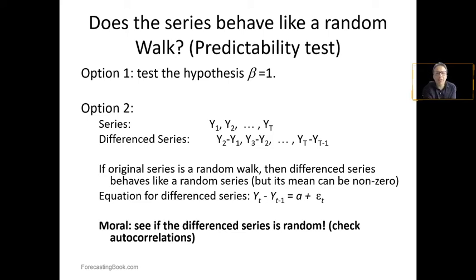In general, if the original series is a random walk, then the differenced series behaves like a random series, but its mean can be non-zero. So the equation for a differenced series is Standard and Poor's in time t minus Standard and Poor's in time t minus one equals the parameter a plus the error.